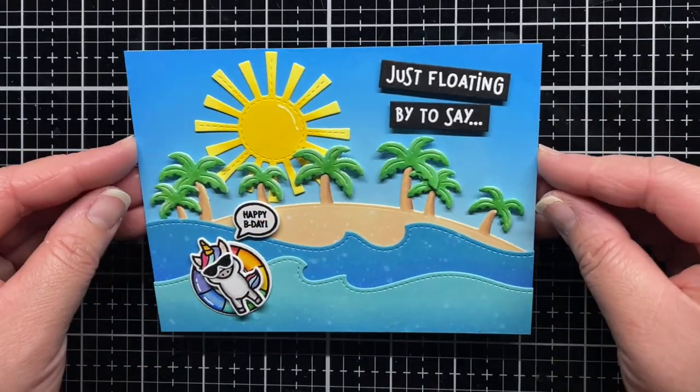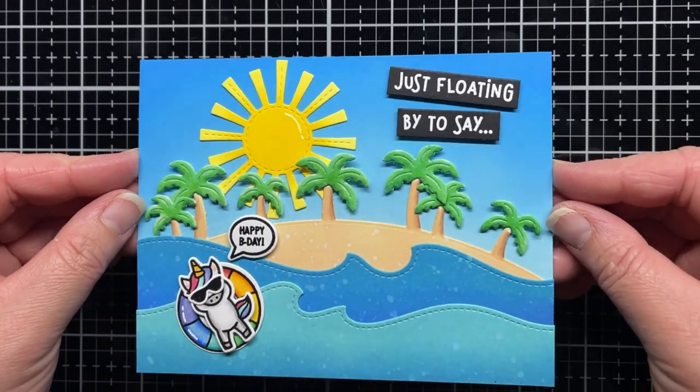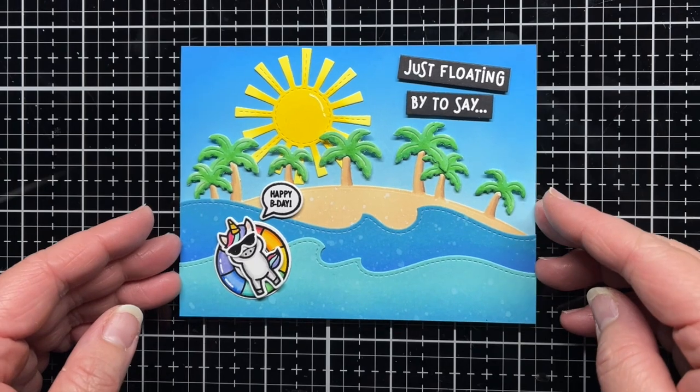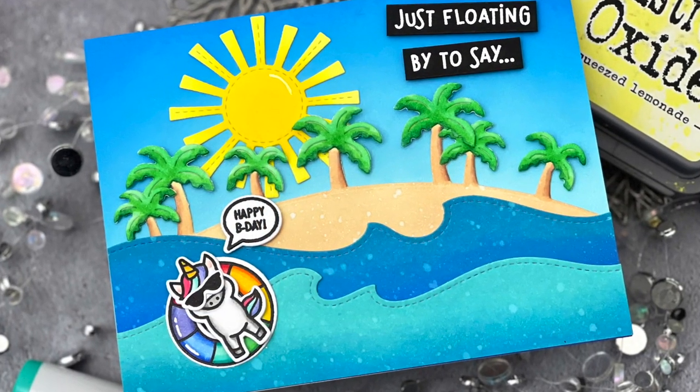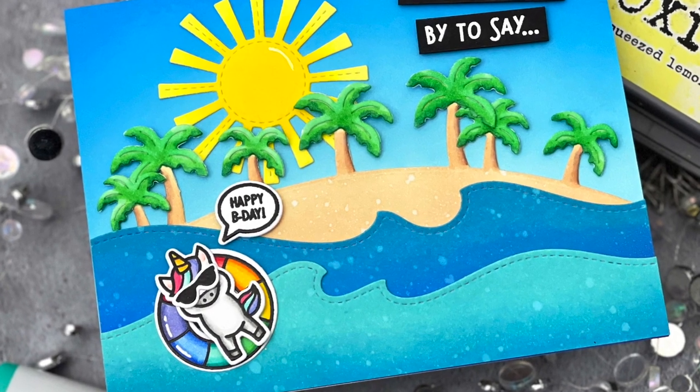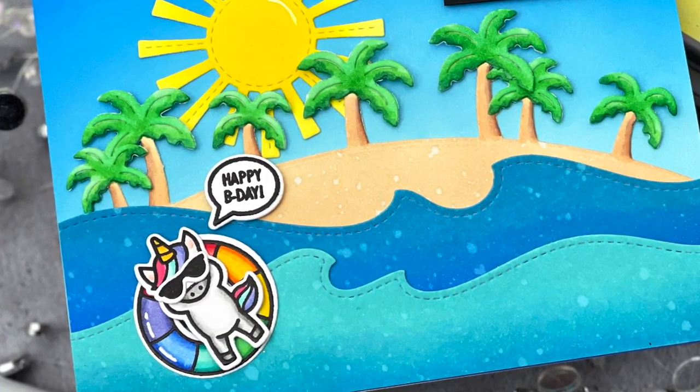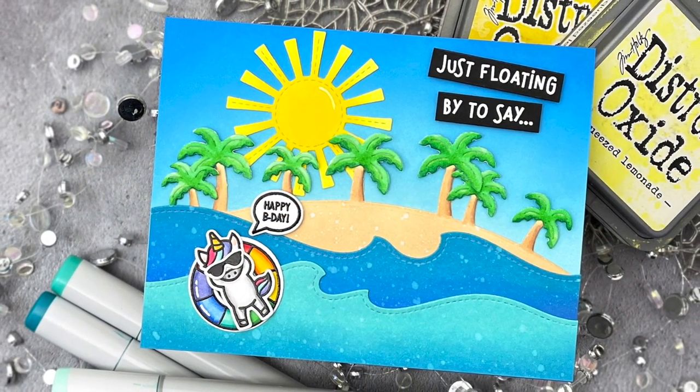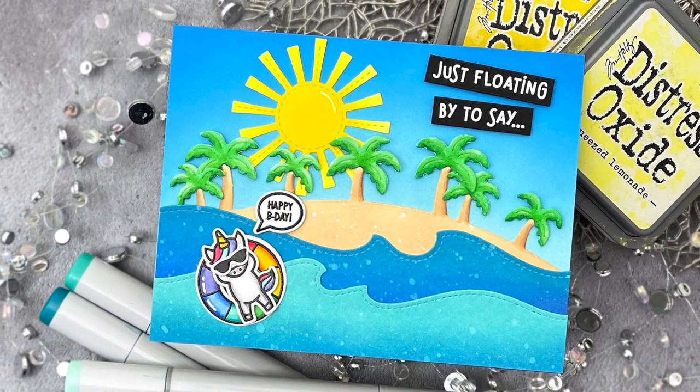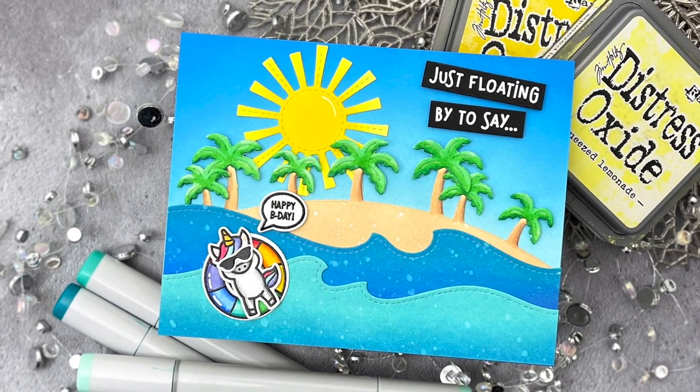Finally, off camera I add a little glitter pen to the inner tube and a few white gel pen accents. And that's it! I hope you enjoyed today's video and if you did, I'd love for you to give it a thumbs up and leave a comment. Be sure to subscribe to the Lawn Fawn channel for even more crafty inspiration. Thanks so much for watching and until next time, have a fantastic day and happy crafting! Bye!